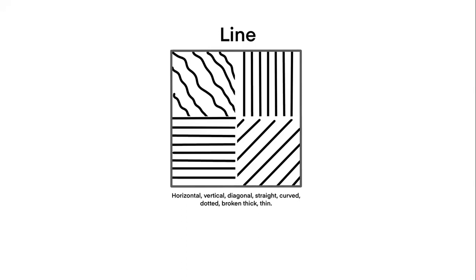Next up is shape. A shape is a two-dimensional or flat figure. It can be geometric like a square or a circle, or organic like any other shape.